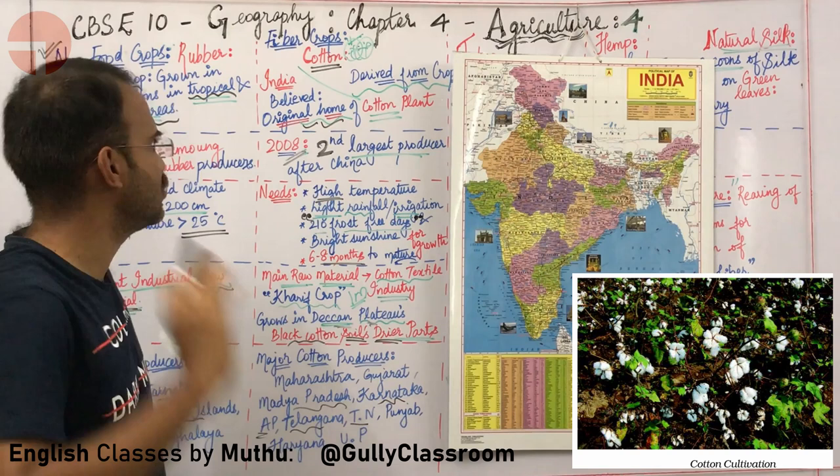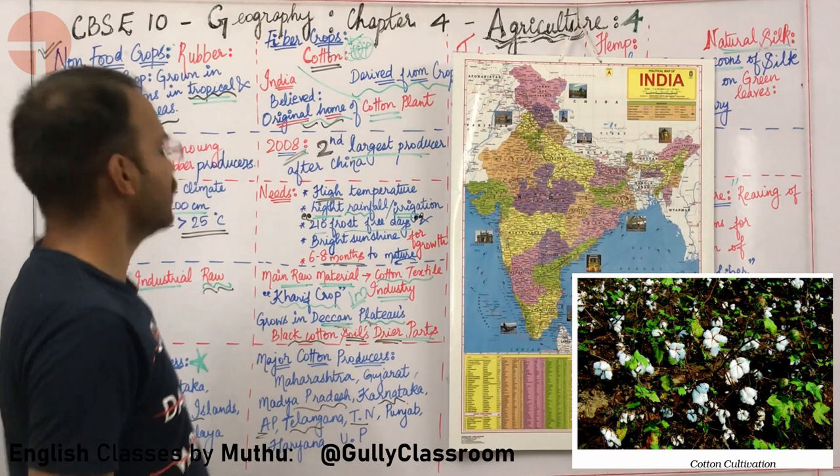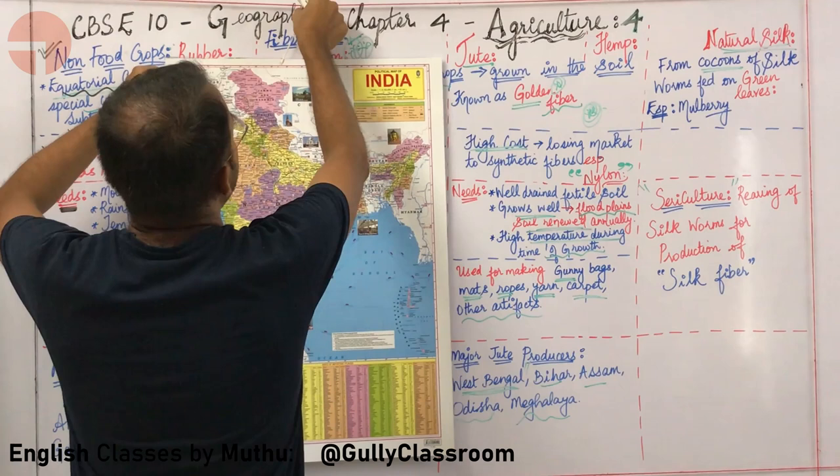To summarize cotton-producing southern states: Tamil Nadu, Andhra Pradesh, Telangana, and Karnataka. Now, what about jute and hemp?